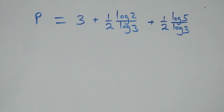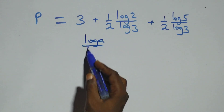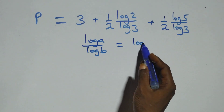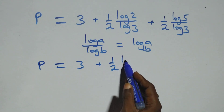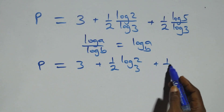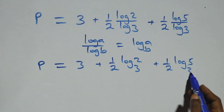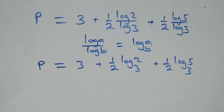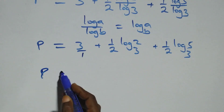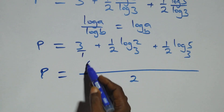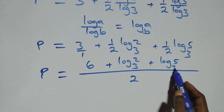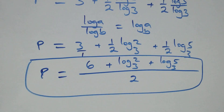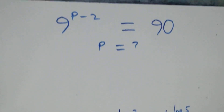From here we apply the change of base formula: log a over log b is the same thing as log a to base b. Applying this, p equals to 3 plus one half times log₃2 plus one half times log₃5. Therefore the final answer is p equals to 3 plus (log₃2 + log₃5) all over 2, which can also be written as p equals to 6 plus log₃2 plus log₃5, all over 2.